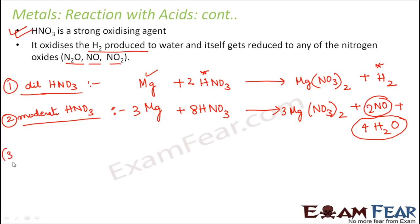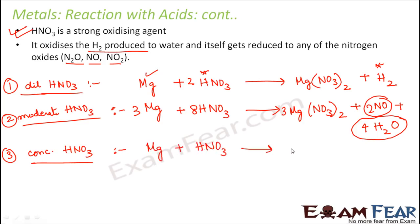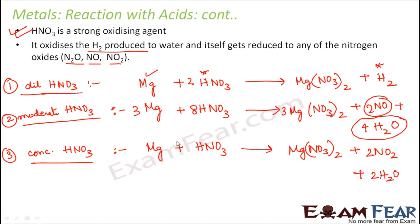In the third scenario, if we take completely concentrated nitric acid, nitric acid becomes a really strong oxidizer. Magnesium nitrate is still formed, but now instead of nitrous oxide, we get nitrogen dioxide (NO2) plus H2O. So as the concentration of nitric acid increases, the oxidizing effect also increases — going from H2 gas in dilute, to NO in moderate, to NO2 in concentrated nitric acid.